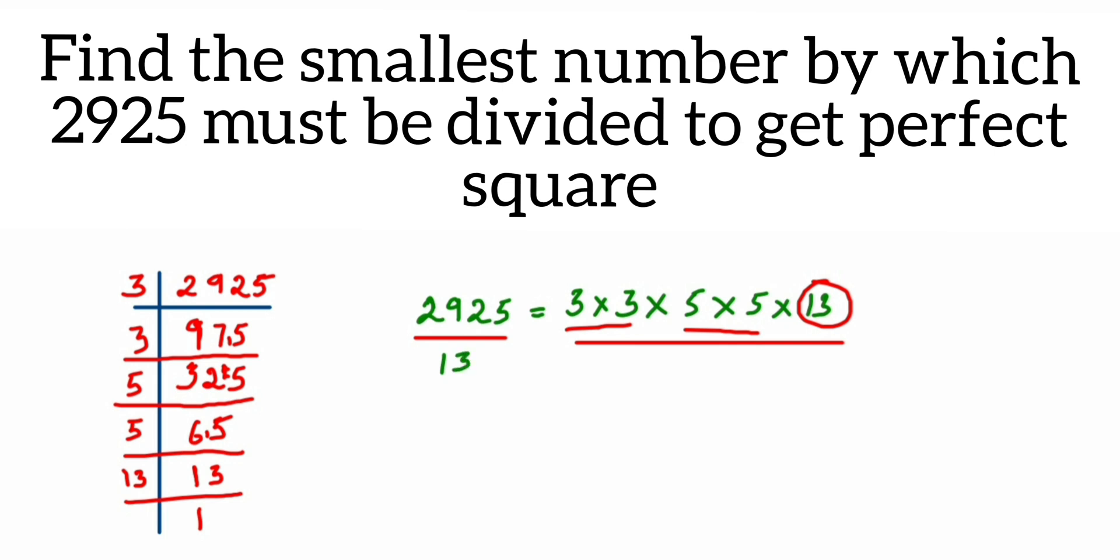So I'm going to divide both sides by 13. It's very simple: just look for the number which is single, which is not paired, and divide with that number. So on the right-hand side, 13 will get cancelled. On the left-hand side, just divide the number or you can cancel the number. You'll get 225.